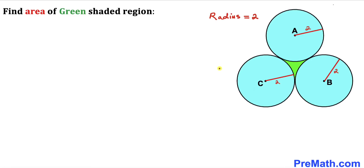Welcome to pre-math. In this video we have got three identical circles with radius 2, as you can see in this diagram. These circles are tangent to each other, and we are going to calculate the area of the green shaded region in between these circles.